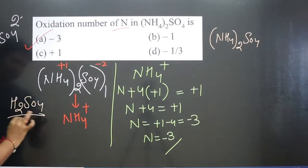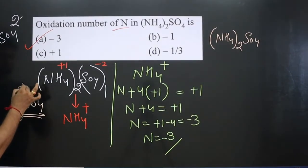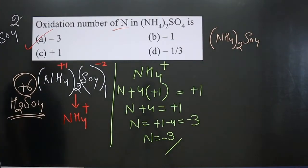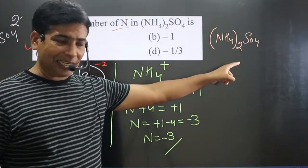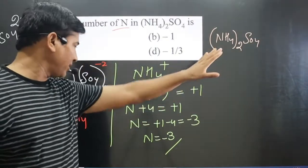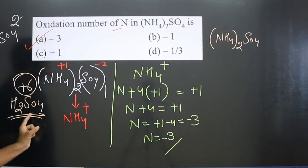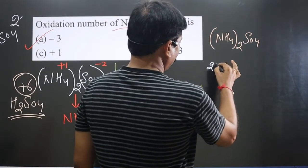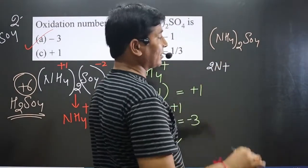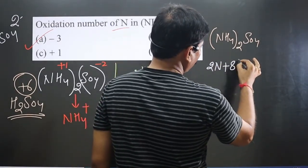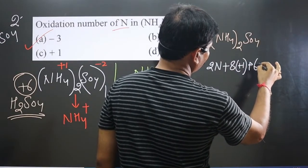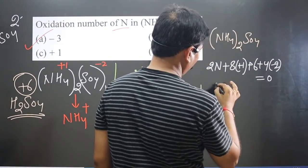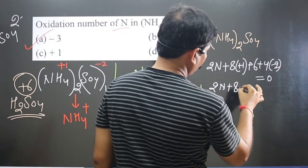Looking at H2SO4, we can see that sulfur is present in its highest oxidation number. The sulfate ion comes from H2SO4, where sulfur is +6. So we set up the equation: 2N + 8(+1) + (+6) + 4(−2) = 0, since the overall compound is neutral.